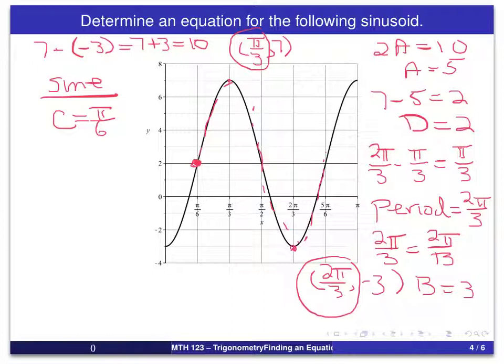With that now, we do have a complete equation for this sinusoid. It would be y equals 5 times the sine - now I use the value for b, which is 3, times t minus the phase shift, which is π/6 - plus the vertical shift, which in this case is 2. So there's an equation for this sinusoid.